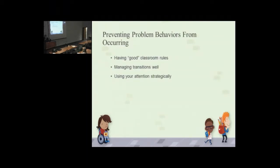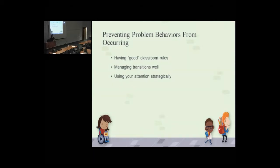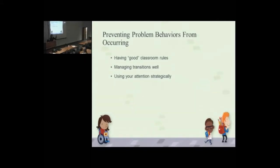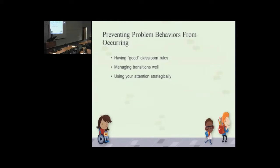When we talk about preventing problem behaviors from occurring, these are structural things a lot of times. They're having good classroom rules. What makes a good classroom rule? Consistent, reasonable, enforceable, positive, specific enough that you'll know it when you see it. You can respond more effectively if you know if that's a rule violation or in accordance with the rules.